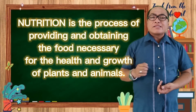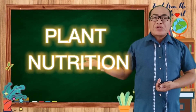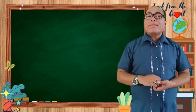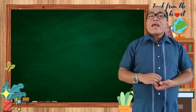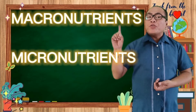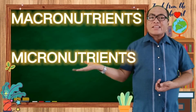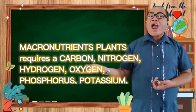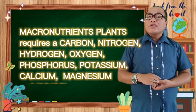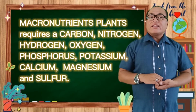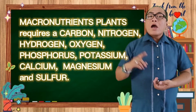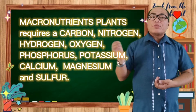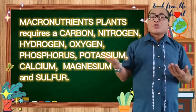Nutrition is defined as the process of providing and obtaining the food necessary for the health and growth of plants and animals. We have plant nutrition. Essential elements are indispensable elements for plant growth. They are divided into macronutrients and micronutrients. The macronutrients plants require include carbon, nitrogen, hydrogen, oxygen, phosphorus, potassium, calcium, magnesium, and sulfur.